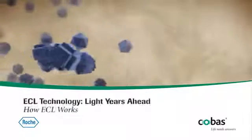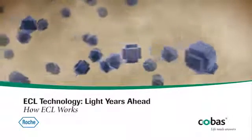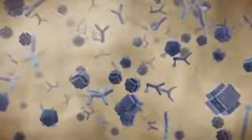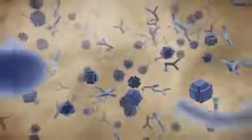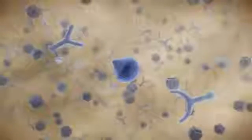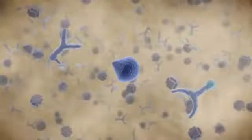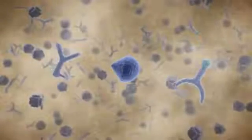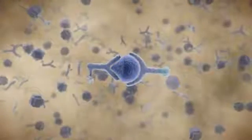In immunoassay detection, carryover-free disposable tips are used to pipette a patient sample into a disposable cup. Incubation with two antibodies begins. The first antibody is labeled with biotin, the second is labeled with ruthenium. Both are highly specific to binding sites on the target antigen.